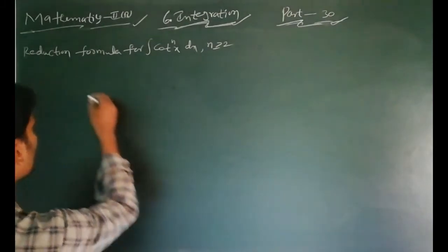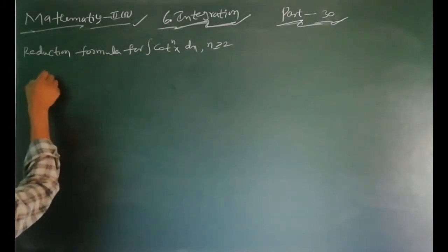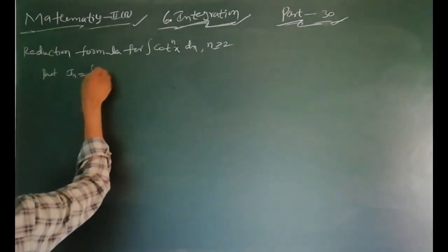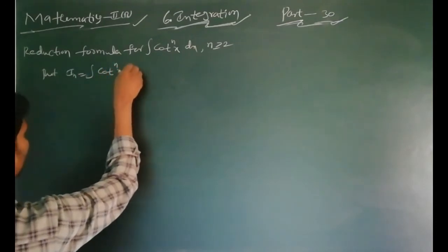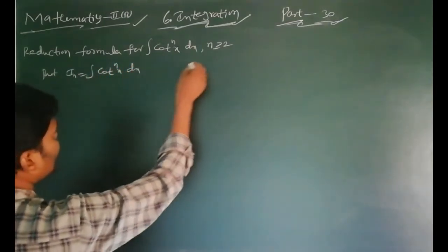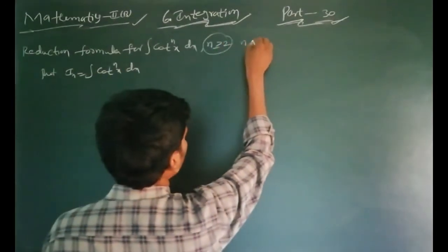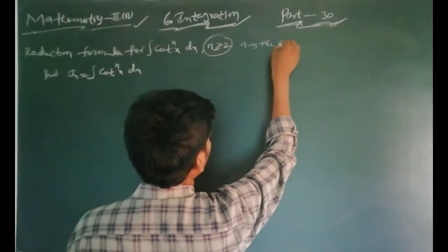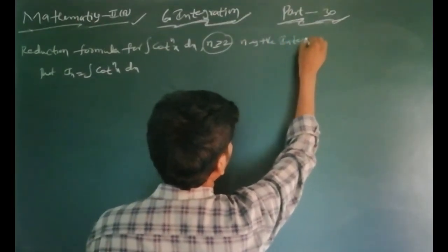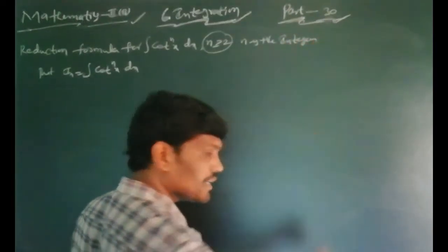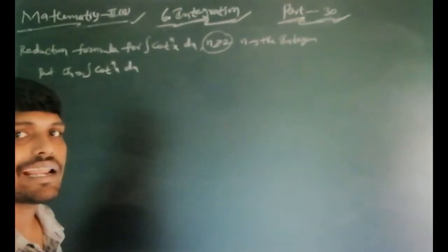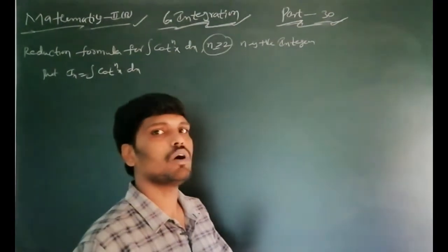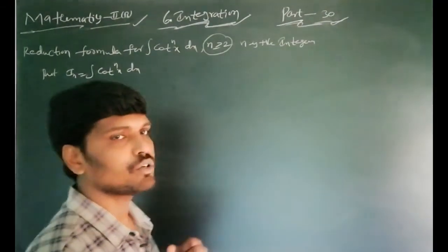Suppose we can write: let I_n equal to the integral of cot^n x dx, where n is a positive integer and n is greater than or equal to 2.